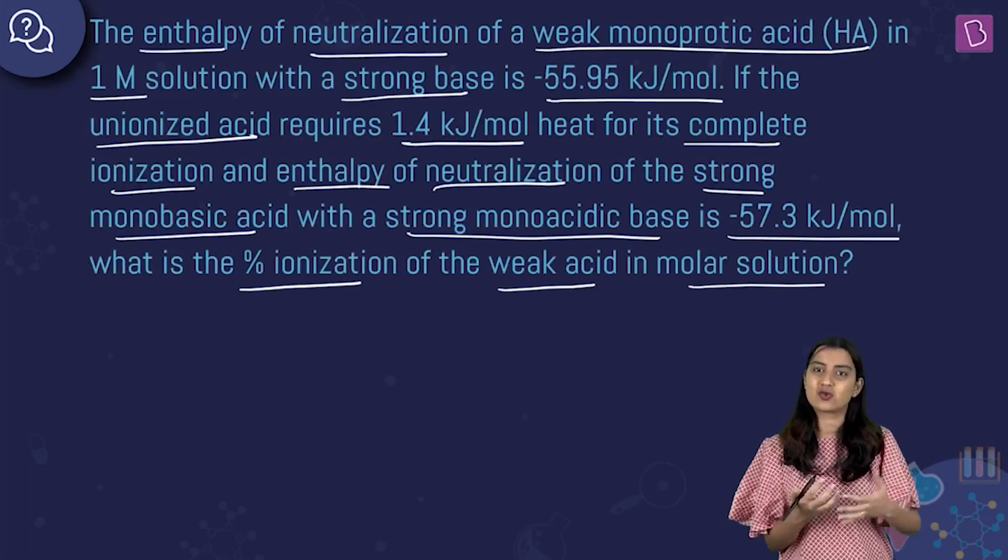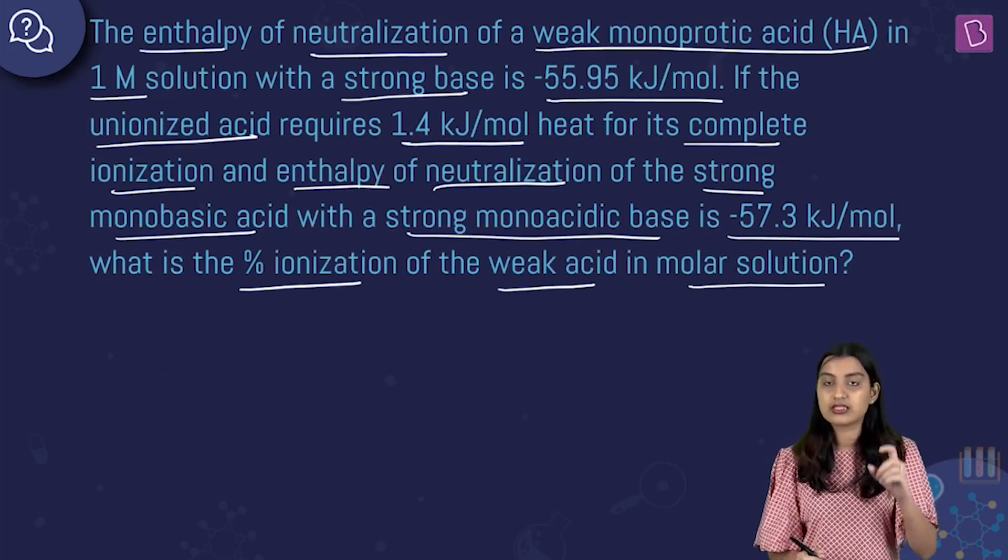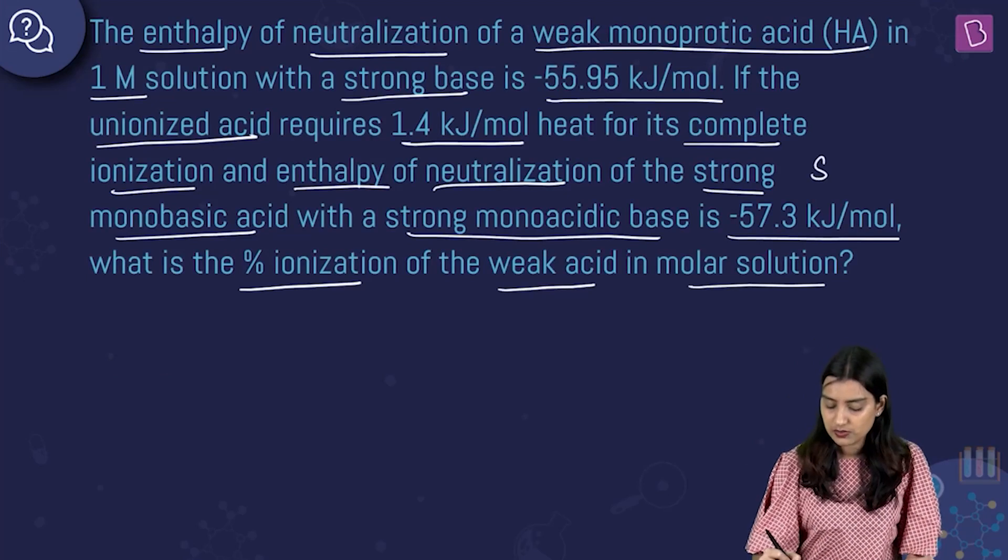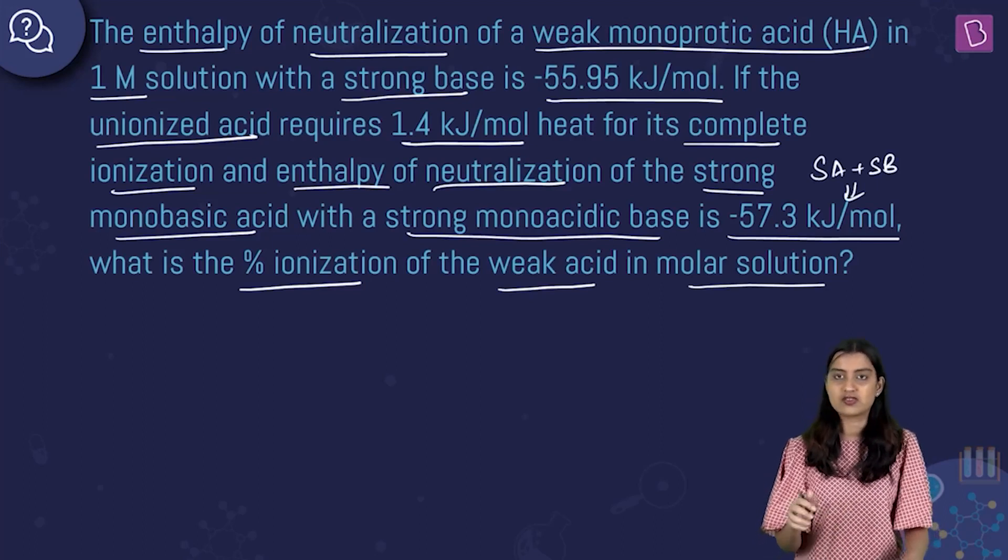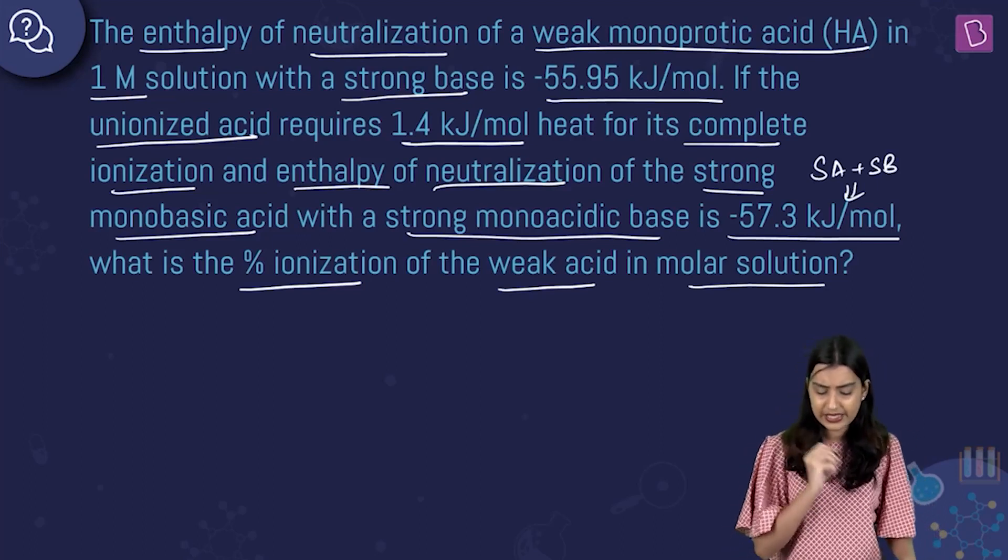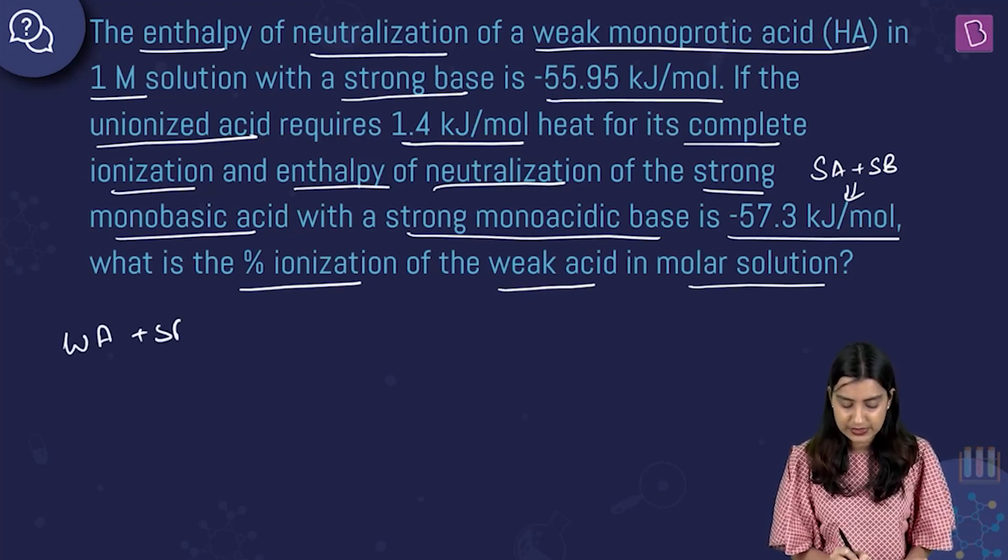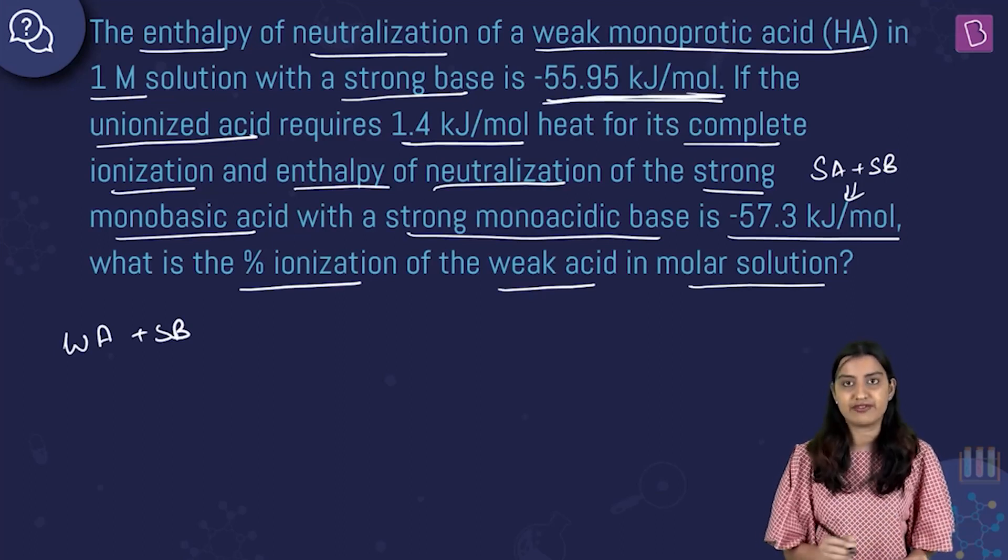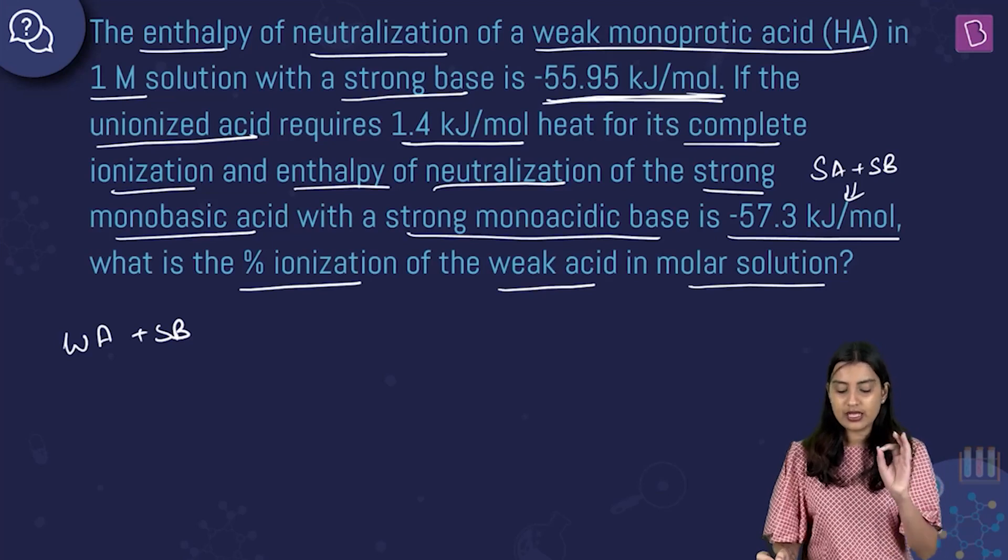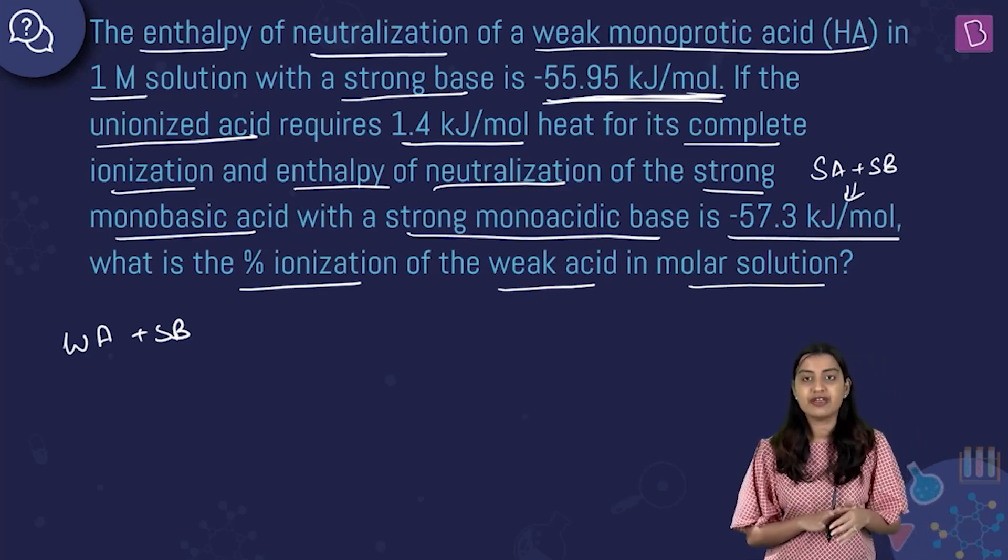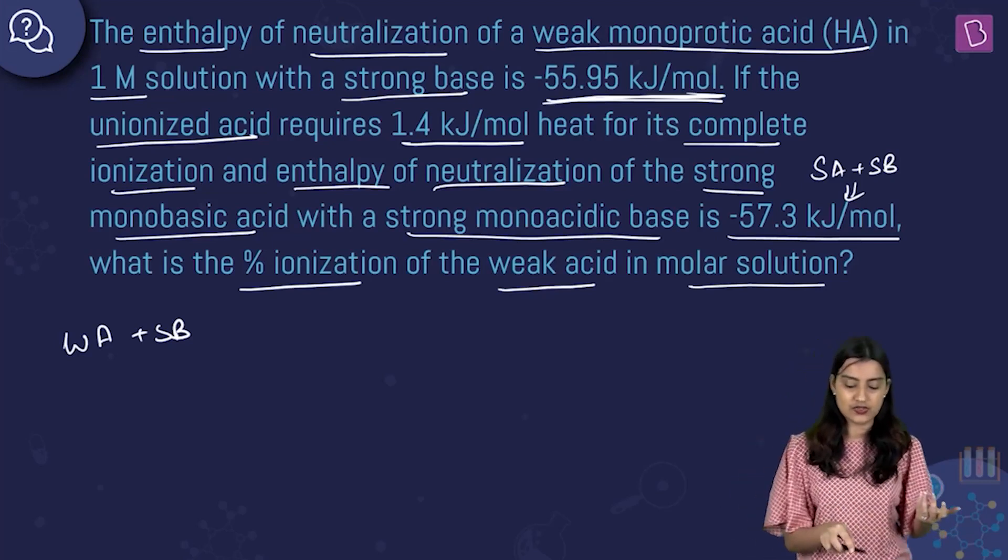Basically, this looks like a long question. It's a very simple idea. They're telling you that in the case of strong acid, strong base neutralization - strong acid plus strong base gives you salt plus water. For that neutralization, this is your delta H. They have given you a delta H for weak acid strong base reaction. And they are telling you that the unionized acid will require 1.4 kJ per mole. From here, you need to find out percentage ionization.